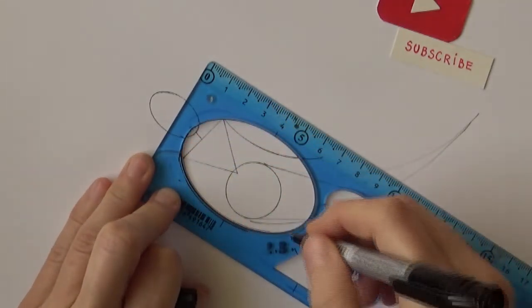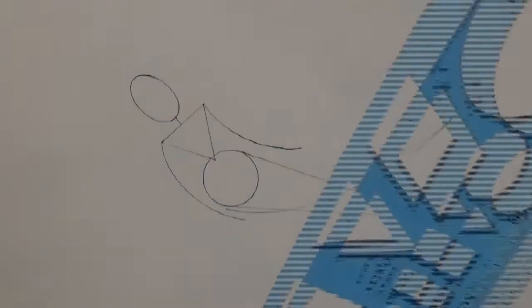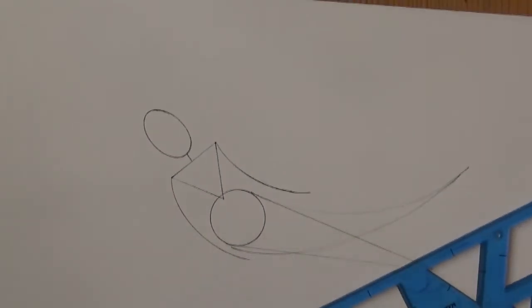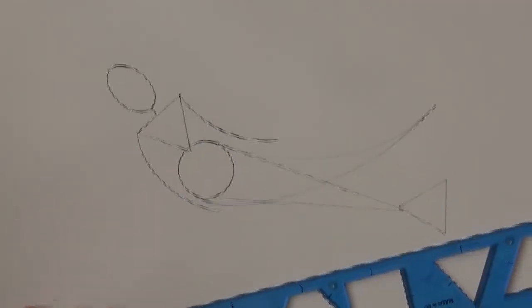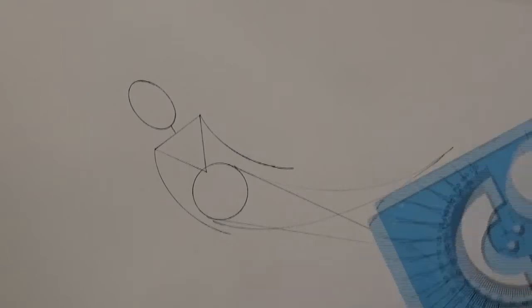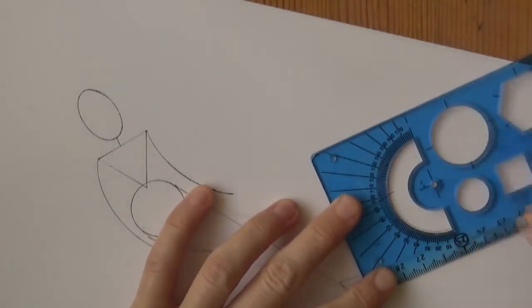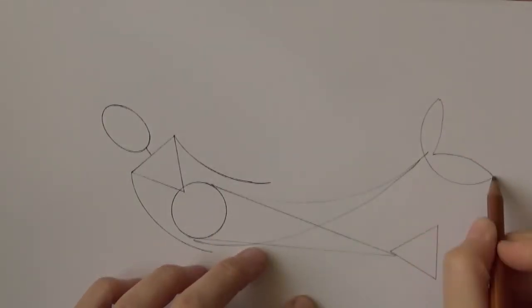Usually long limbs are considered elegant in the mermaid world, if you didn't know. For the end of the tail, you can again use the triangle if you want to, and it would look like this. Or you can use the half circle and get a real fishy tail, and then you can just fill it in.